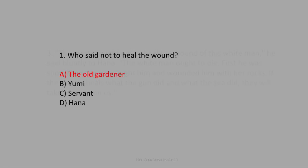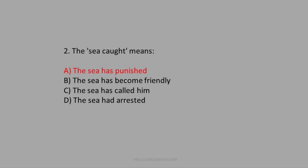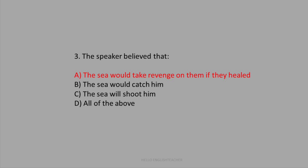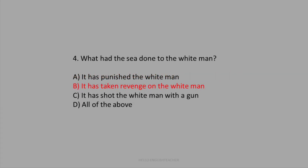Question 1: Who said not to heal the wound? The answer is the old gardener. Question 2: What does 'the sea caught him' mean? The answer is the sea has punished him. Question 3: What did the speaker believe would happen if they healed the man? He believed the sea would take revenge on them. Question 4: What had the sea done to the white man? According to the old gardener, it had taken revenge on the white man.